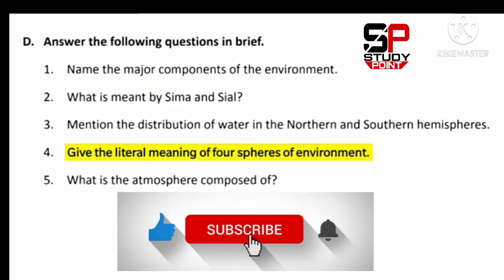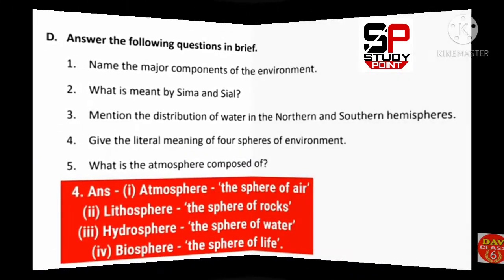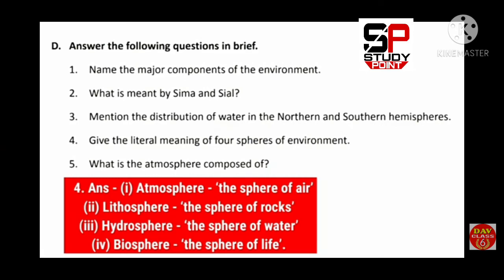Question number four: Give the literal meaning of the four spheres of the environment. The answer is: atmosphere — the sphere of air; lithosphere — the sphere of rock; hydrosphere — the sphere of water; biosphere — the sphere of life.